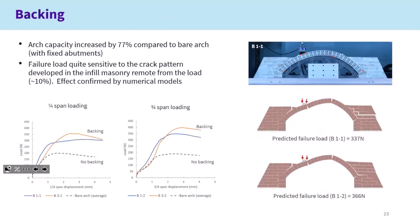Here we're presenting results of bridges with backing. In this case, the backing provided an increased capacity by 77%. Similarly to the bridges with spandrels, the failure load was quite sensitive to the crack pattern in the backing. We had a difference in load: loading at quarter span compared to three-quarter span, the capacity increased by around 10%. That's something we've also observed in the numerical models — we tried to replicate roughly the same failure mechanism, and in that case we also had this 10% difference in load capacity.